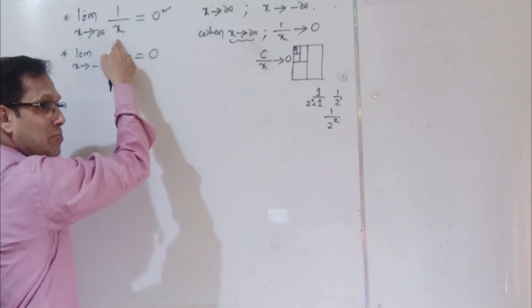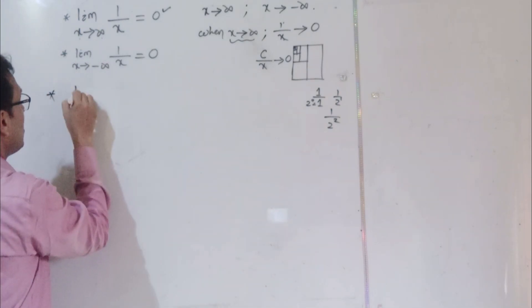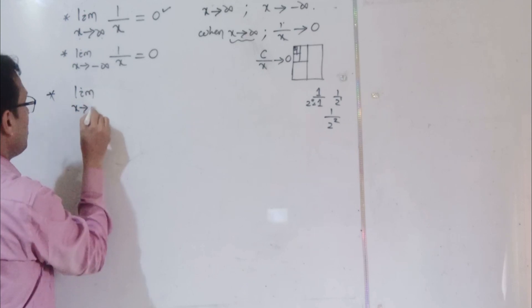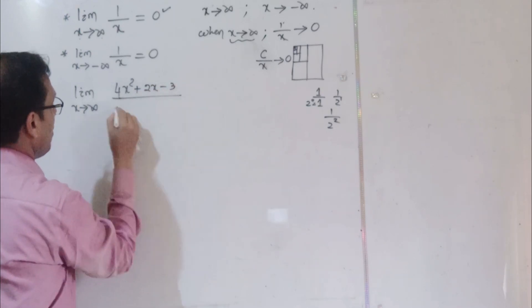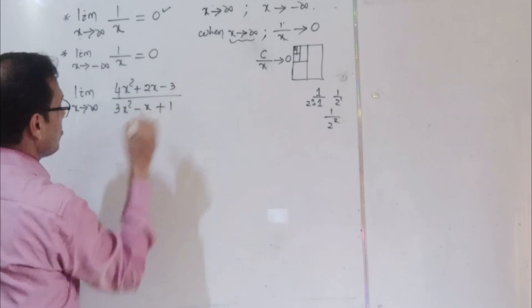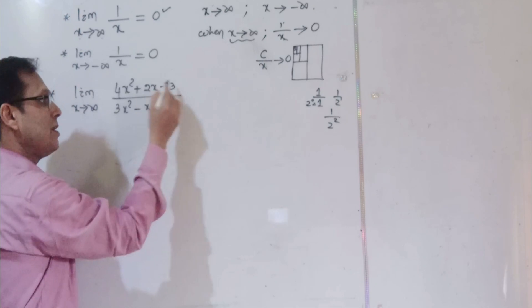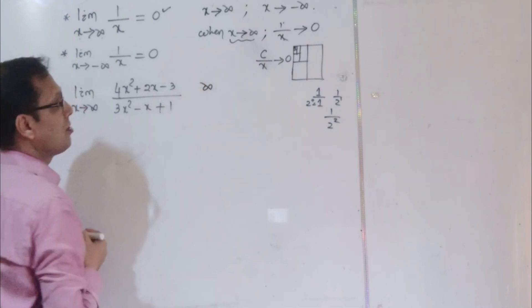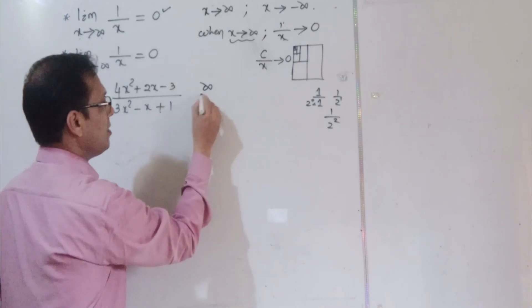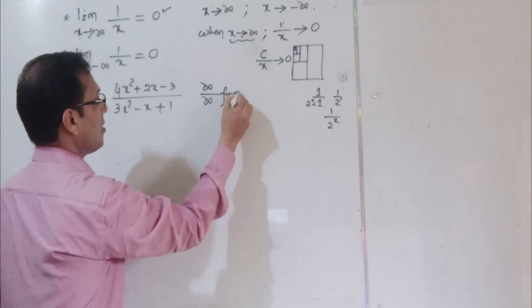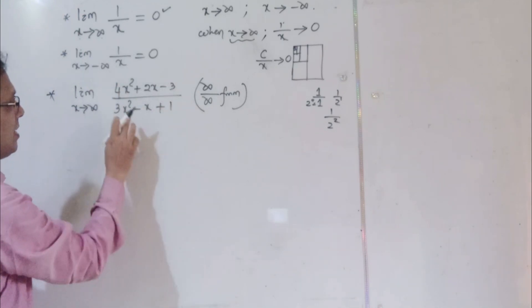Let's take one example. Suppose limit x tends to infinity of (4x² + 2x - 3) by (3x² - x + 1). When x is infinity, x² is infinity, so the numerator is infinity and the denominator is also infinity. This gives us an infinity by infinity form.